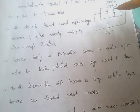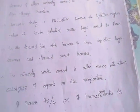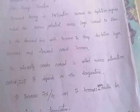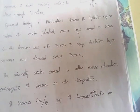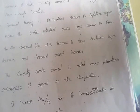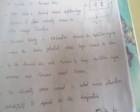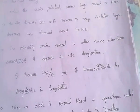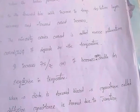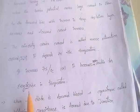In forward bias, as temperature increases, the depletion region decreases and forward current increases. The minority carrier current is called reverse saturation current — very important. It depends upon temperature: it increases 7% for every degree centigrade, and it becomes approximately double for every 10 degrees rise in temperature.